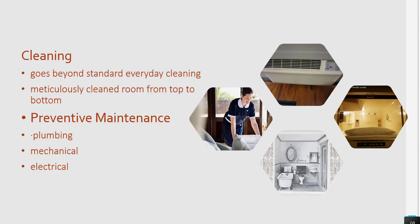Moving forward — cleaning. After CanFixit is completed, housekeeping has to thoroughly clean the room. It goes beyond standard everyday cleaning, meticulously cleaning the room from top to bottom. During the preventive maintenance, there are three major areas: plumbing, mechanical, and electrical, which come under MEP, in addition to painting, polishing, and those civil areas.